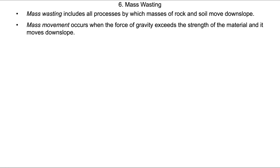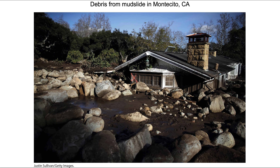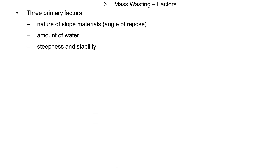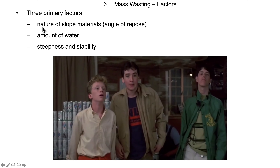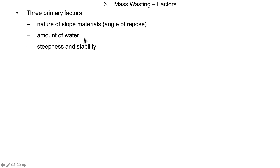This brings us to mass wasting — something that happens quickly and very rapidly. Mass wasting includes all processes by which masses of rock and soil move down slope. Movement occurs when the force of gravity exceeds the strength of the material. Here we have an example from Montecito, California, where a mudslide buried part of the town. The primary factors include the nature of slope materials including the angle of repose — how steep can you pile this material before it collapses — the amount of water, and the steepness and stability of the slope.